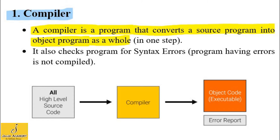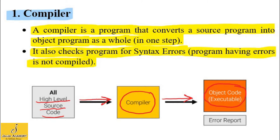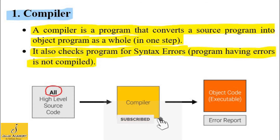As a whole means at a time, in a single step. It also checks the program for syntax errors, called compile-time errors, and programs having errors are not compiled. As you can see in this diagram, the input to the compiler is a high-level source code, which is sent to the compiler. The compiler converts this high-level source program into object code, which is an executable code. The whole program is provided to the compiler at a time, and the compiler then converts it into object code.